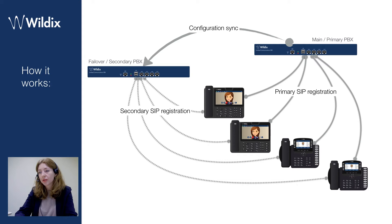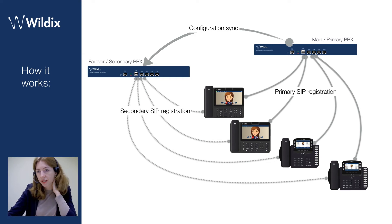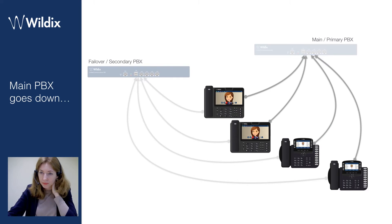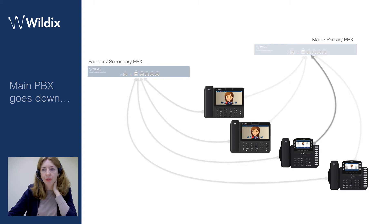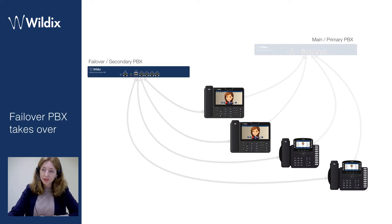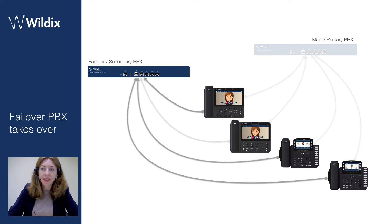Devices have SIP registration on both PBXs, and there is a configuration sync running on the secondary PBX which syncs all the configuration done on the main PBX to the secondary PBX. So all configuration changes must be performed on the main PBX only. If the main PBX goes down, nothing bad happens — you can still make calls and use your devices after about one to two minutes, because the failover PBX takes over.